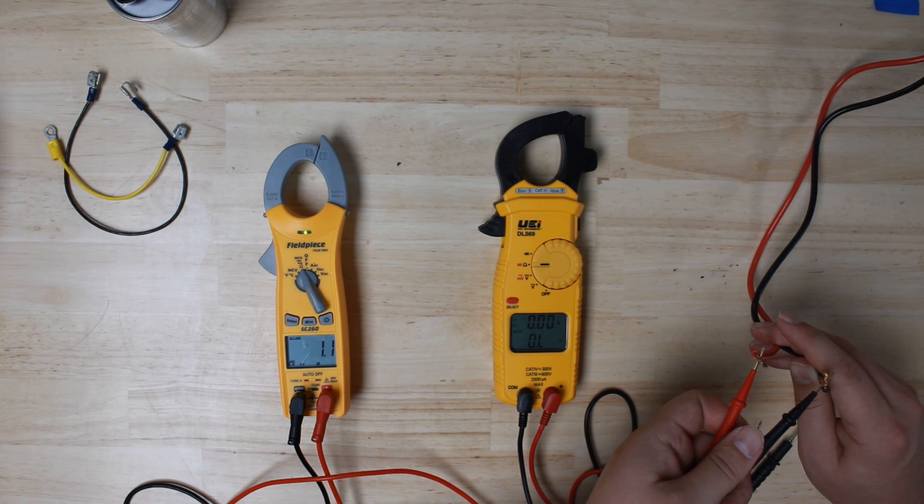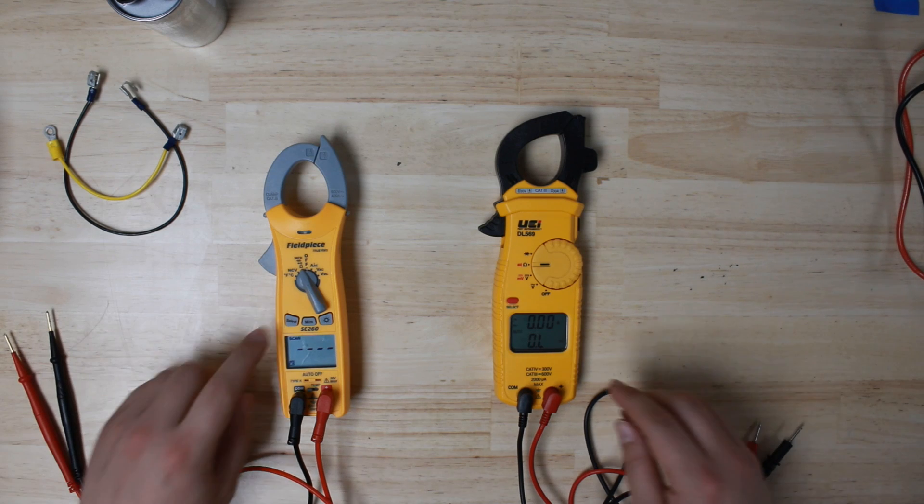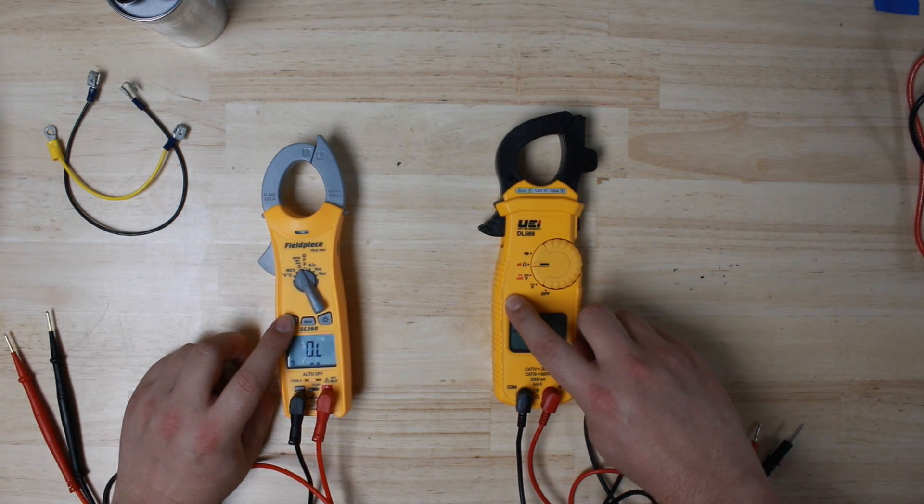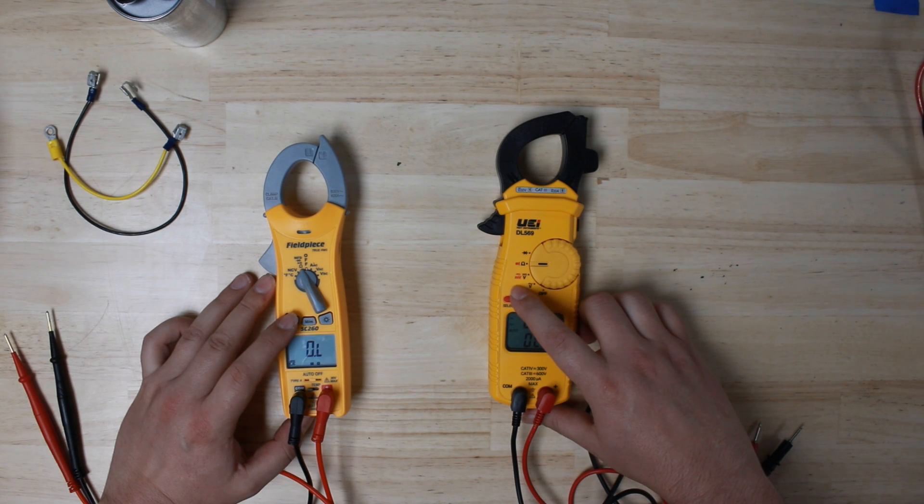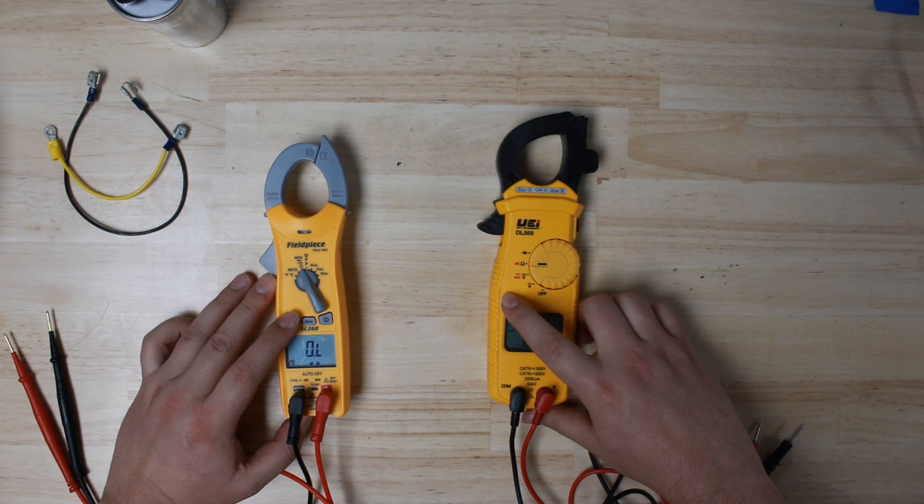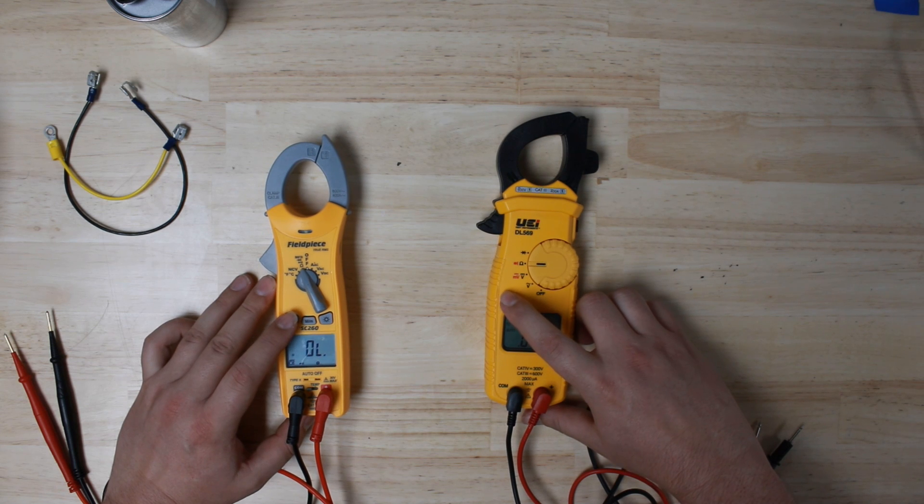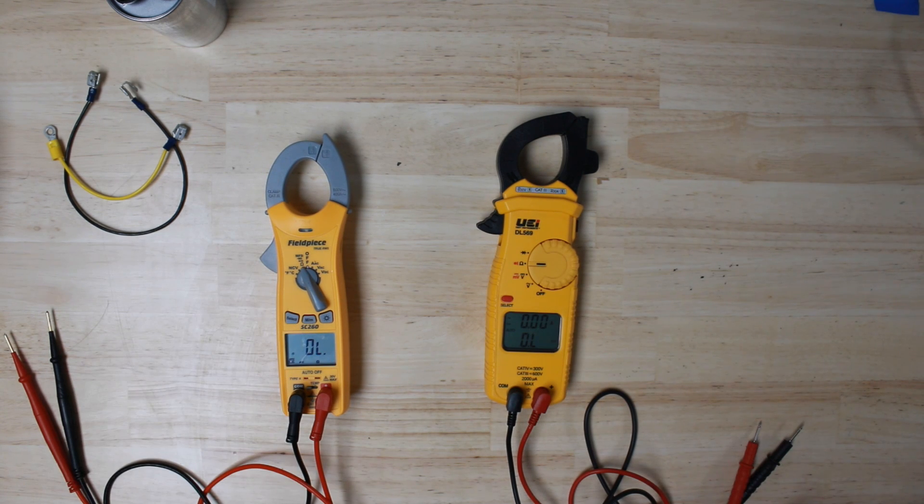So that auto setting is pretty good. Know that sometimes you might need to actually push select, which will allow you to measure in different amounts of ohms, mega-ohms, or kilo-ohms. That's how to measure resistance.